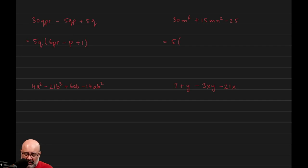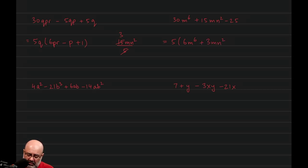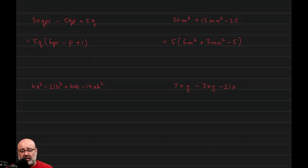We open parentheses immediately after writing the GCF, and then we divide the terms by the GCF. So 30m⁶ over 5 would just be 6m⁶. Then we have 15mn² divided by 5 — 5 goes into 15 three times, so we have 3mn². And then finally, negative 25 over 5 is just negative 5. So that's our answer. If you want to be certain, distribute the 5 and you'll get the same thing we started with, indicating it's correct.